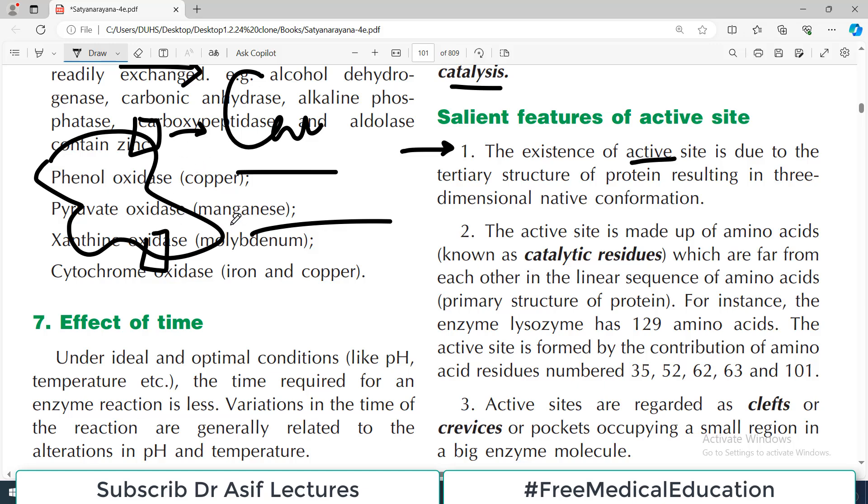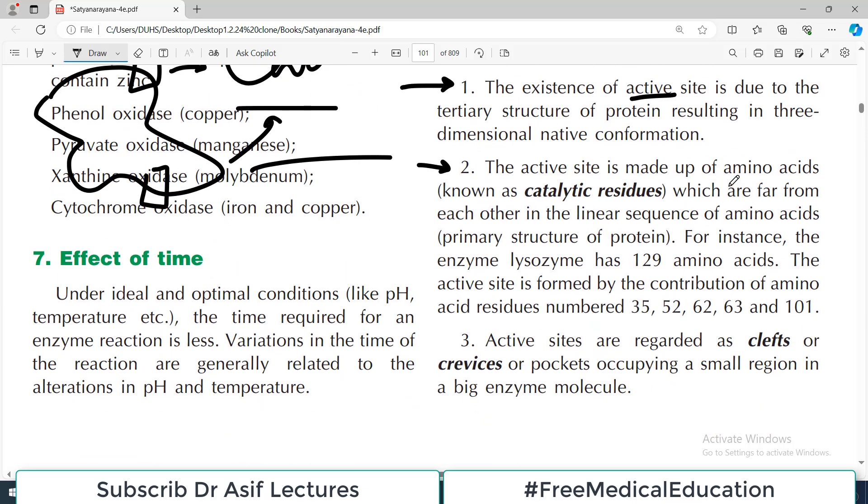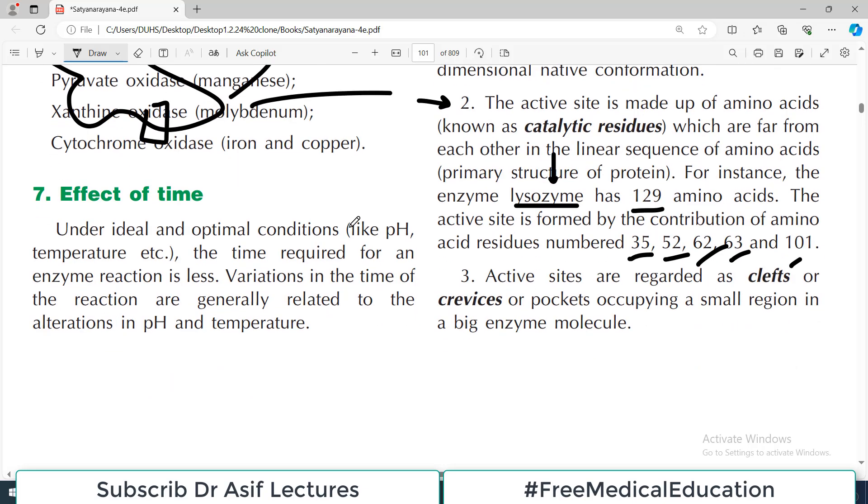The second property is that the active site is made up of amino acids which are far from each other in the linear sequence of amino acids. For instance, the enzyme lysozyme has about 129 amino acids. The active site is formed by the contribution of amino acid numbered 35, 52, 62, 63, and 101. If we study the linear structure of the protein, these are the first amino acid through the 129th amino acid.